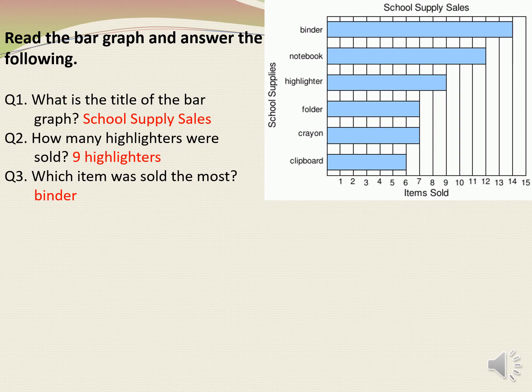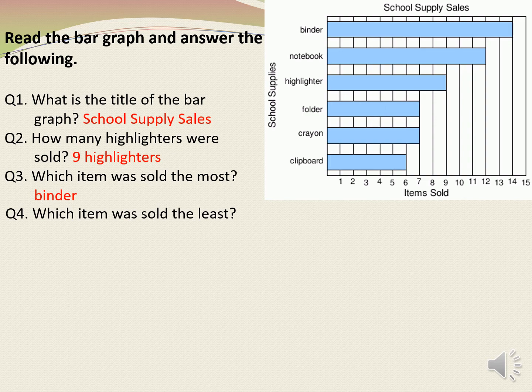Next: which item was sold the most? To find out the answer, we need to see the bar which is the longest. And we get to know the answer — that is binder. Next question: which item was sold the least? To find out the answer, we need to see the bar which is the shortest. And we found that clipboard has the shortest bar. So our answer will be clipboard.